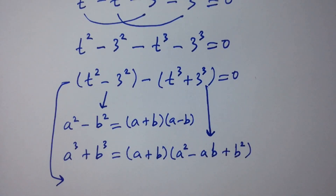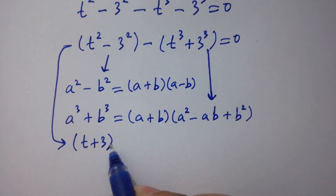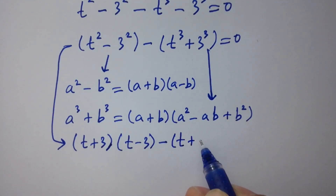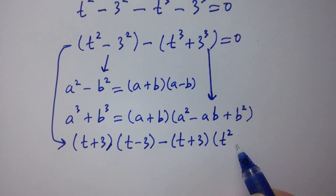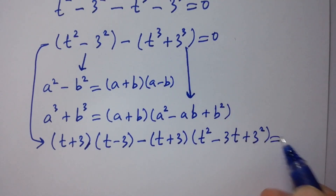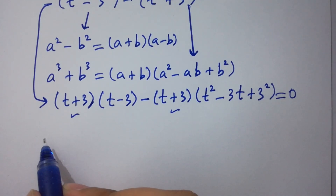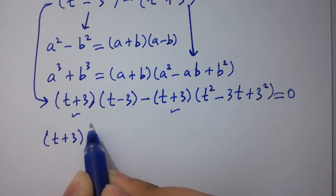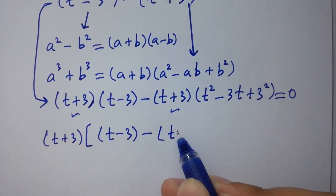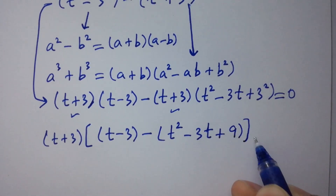Applying the formulas: for t-squared minus 3-squared we get t plus 3 times t minus 3, and for t-cubed plus 3-cubed we get t plus 3 times t-squared minus 3t plus 3-squared, where 3-squared is 9, equals 0.